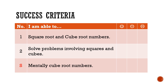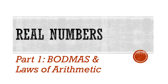Before we end, let's reflect on the success criteria set at the start of the lesson. Are you now able to square root and cube root numbers? Can you solve problems involving squares and cubes? Are you able to mentally cube root numbers? If you have any questions, post them in the comments below. We've reached the end of this chapter on Factors and Multiples. An extension Olympiad video on HCF, LCM, and the Euclidean algorithm is coming, as well as the next O-level episode on real numbers covering the BODMAS rule and laws of arithmetic. Don't forget to like and subscribe for more math videos.